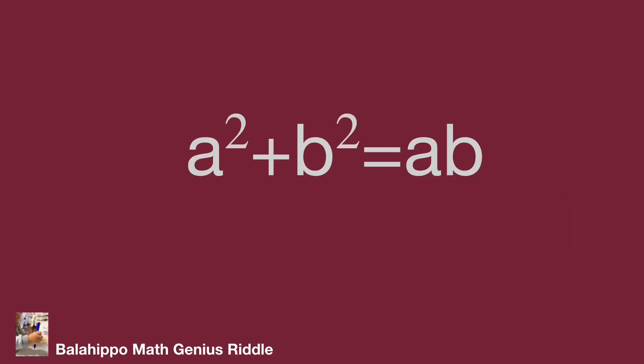The given equation is a squared plus b squared equal to ab. The question is to prove there are no positive integer solutions for a and b. Let's look at some numbers — we call this Idea A.